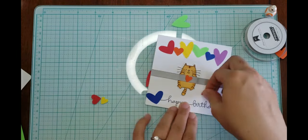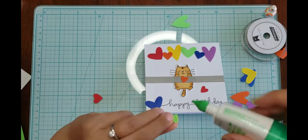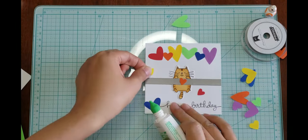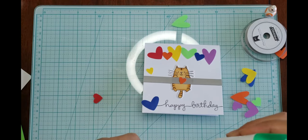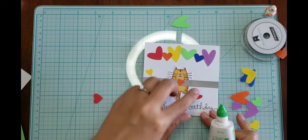After I finished with the front of the card, I decided to add the rainbow sequence of hearts on the inside. I still had lots of extra hearts. I put them away to be used another time.